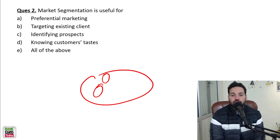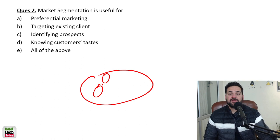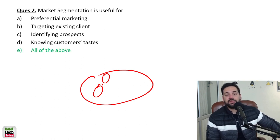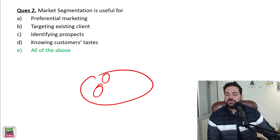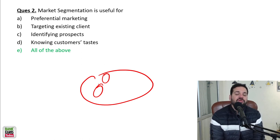How is that useful? For example, Kinder Joy - you want to sell Kinder Joy, kinder joy ki ad lagani hai. So you can advertise on Cartoon Network or such places which are used by the children. Children demand karte hain, so children ke liye. That's how market segmentation helps. It is useful for preferential marketing, targeting existing clients, identifying prospects, knowing the customer taste. So that helps. If Cartoon Network pe ad laga ho, obviously kids will get to know about Kinder Joy and they are going to buy that.